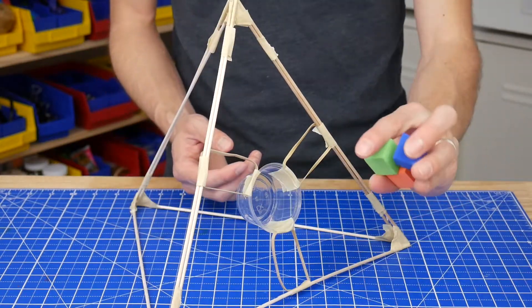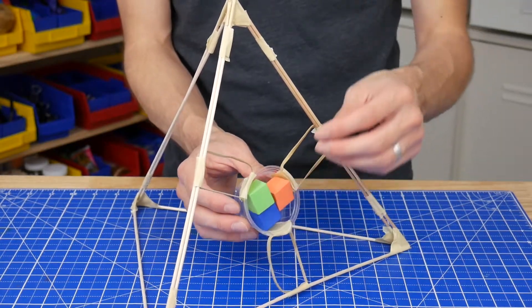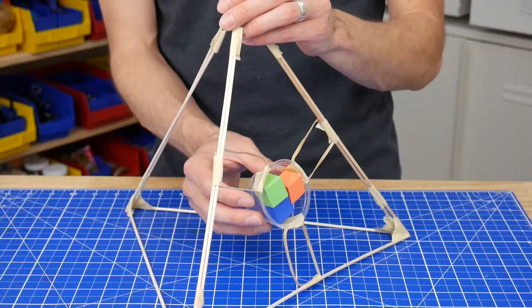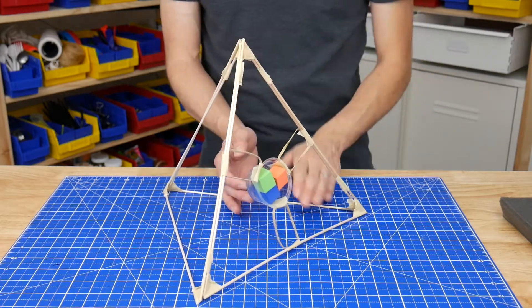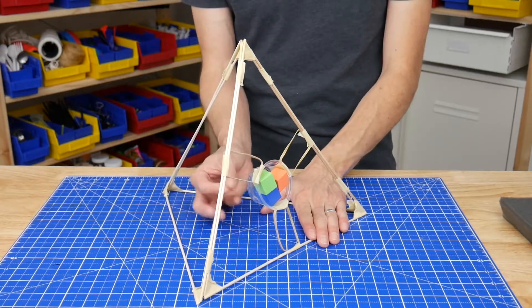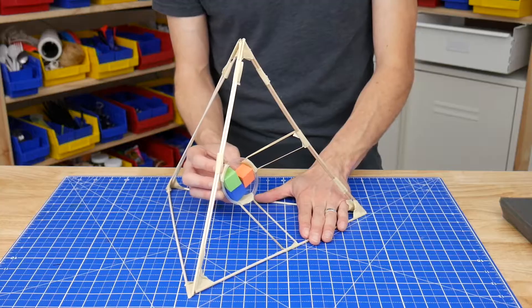To fire, first load your projectiles of choice. I like using these foam cubes because they're cheap and safe to shoot indoors. Use one hand to hold down the frame, either on the top or on the bottom. Then with the other hand, use your fingertips to grip the back of the cup. Pull back as much as you want and let go.